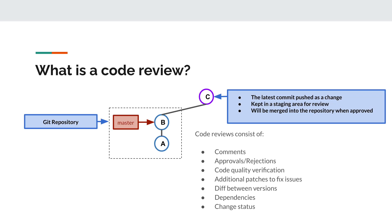A code review is a process of quality assurance that involves others reading and checking source code to offer suggestions, recommendations, or approvals. Performing a code review involves two main stages. The first is submitting code changes to Gerrit, where Gerrit keeps these change commits in a staging area. This is where the second stage happens and the change is reviewed — it can be reviewed by peers or team members, and it can also be verified or tested by continuous integration tools.